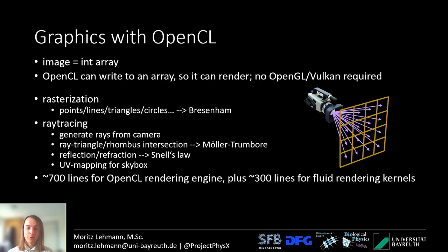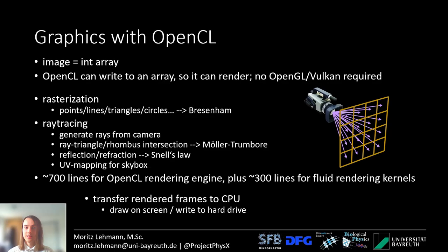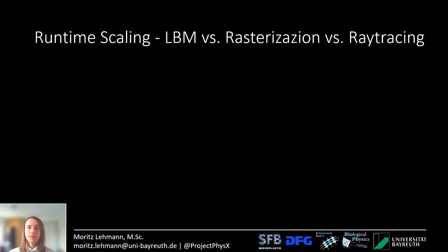Overall, the entire rendering engine — rasterization and ray tracing — is about 700 lines of OpenCL code plus about 300 lines for the custom kernels to render the Lattice Boltzmann fluid. So it is really not a lot of code. Once the frames are rendered, I can transfer them to the CPU over PCI Express and then either draw them on screen or write them to the hard drive.